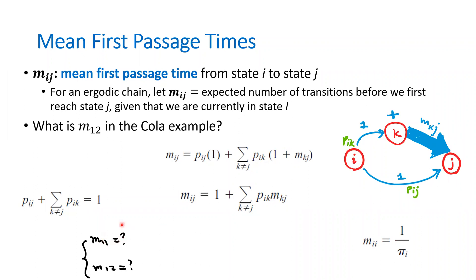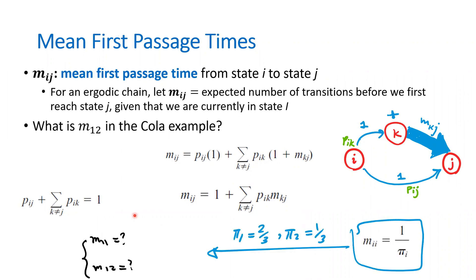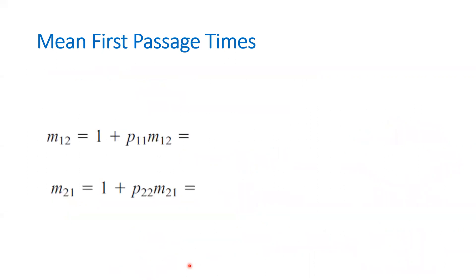Let's calculate m_11 for the cola example. We found π_1 = 2/3 and π_2 = 1/3. So m_11 = 1 / π_1 = 1 / (2/3) = 1.5 steps on average. m_22 = 1 / π_2 = 1 / (1/3) = 3 steps. So if you're drinking cola two, on average — meaning averaged over all people who last purchased cola two — they purchase cola two again after 3 purchases.